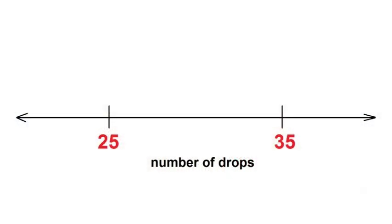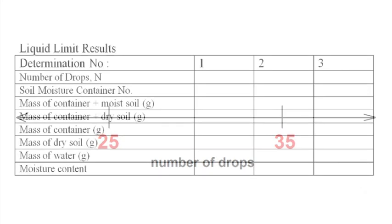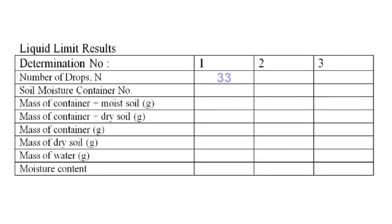Stop the test once the contact length between the two halves of the sample is greater than 13 mm. Ideally the number of drops will be between 25 and 35. If this is the case, then the test was successful. Record the number of drops in a table. Now determine the moisture content of the sample.